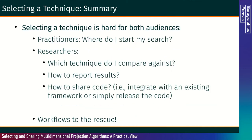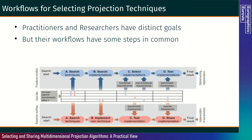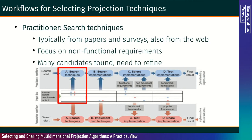The bottom line is that selecting a technique is hard for both audiences. Practitioners usually ask: where do I start my search? Researchers have it a bit more complicated: which technique do I compare against? How to report the results? How to share the code? Workflows come to the rescue. Practitioners and researchers have distinct goals, but their workflows have some steps in common. Practitioners usually start by searching for techniques, typically from papers and surveys but also from the web, focusing mainly on non-functional requirements.